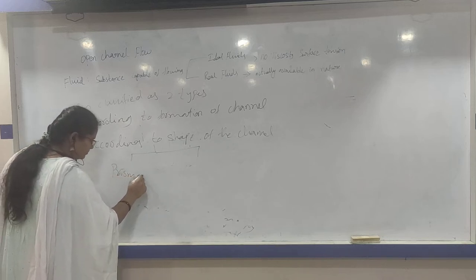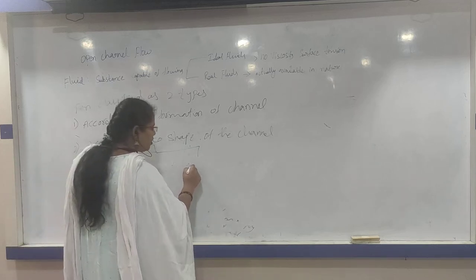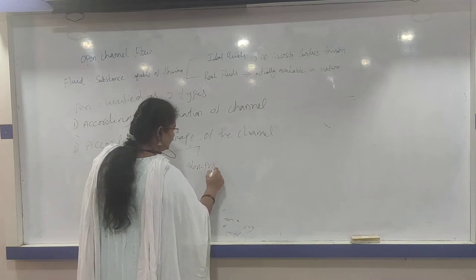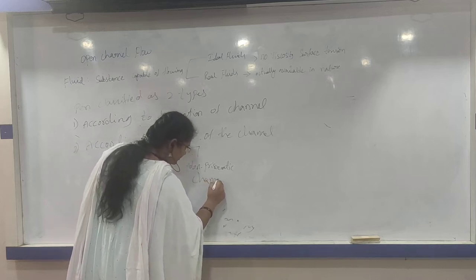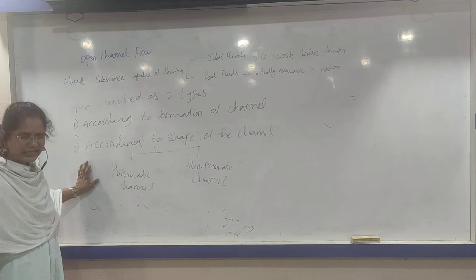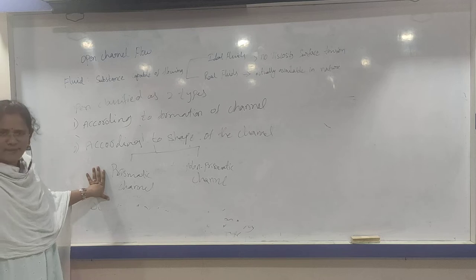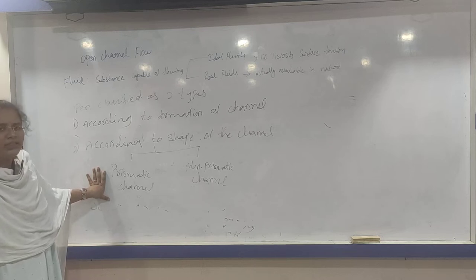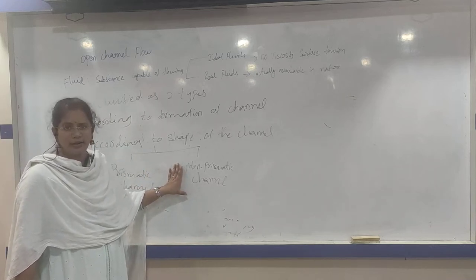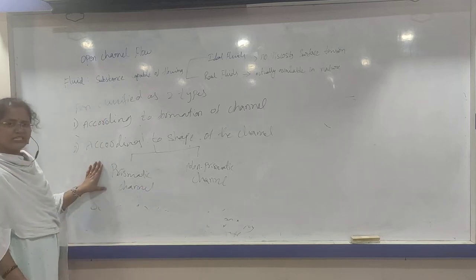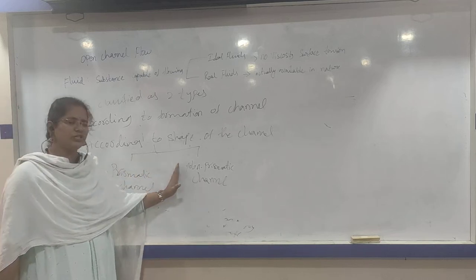According to shape, open channels are of two types: one is prismatic channel and the other one is non-prismatic channel. Prismatic channel is nothing but which consists of regular shape, size, slope and other dimensions. Non-prismatic channel does not consist of any regular shape and size. Prismatic channels are man-made channels; non-prismatic channels are natural channels.